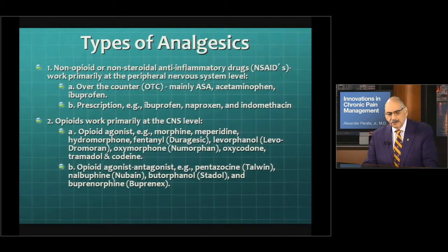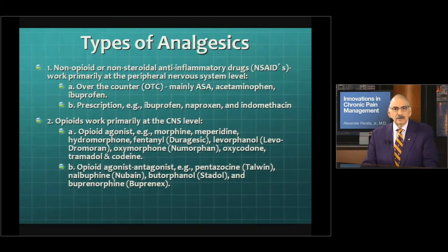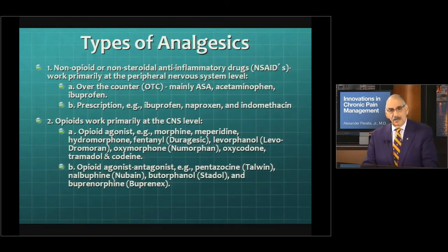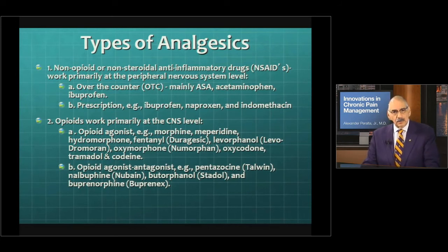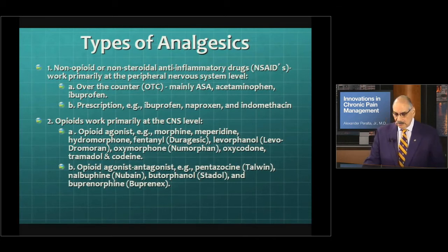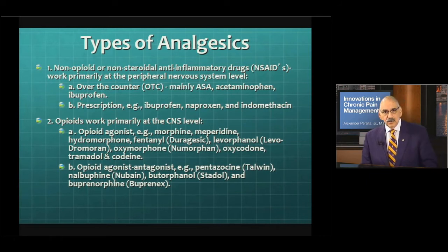How do we treat pain? Well, most of us when we have pain take non-opioid, non-steroidal type of medication — we may take aspirin, we may take Tylenol, sometimes non-steroidal anti-inflammatories. But for severe pain, we need to make sure that we use certain types of drugs — opioids and non-opioids — that help relieve the pain. The opiate agonists are drugs like morphine, meperidine — which is certainly not a drug of choice for chronic pain management — hydromorphone, fentanyl, oxymorphone, oxycodone, tramadol, and codeine.